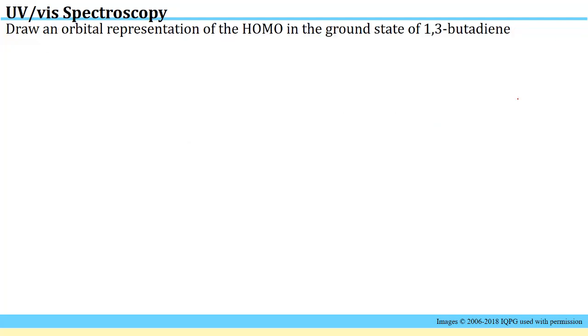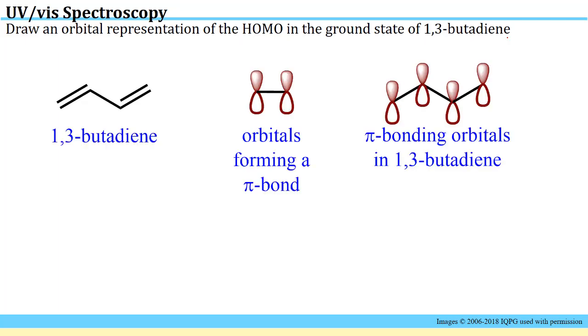The next question is asking you to draw an orbital representation of the highest occupied molecular orbital in the ground state of 1,3-butadiene. This mirrors a question we covered in the video homework for lesson 4.1 on simple pi conjugation. To address this problem, you first need to know what 1,3-butadiene looks like as a simple molecular structure, as shown here.